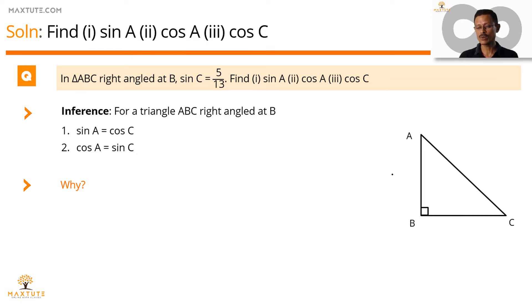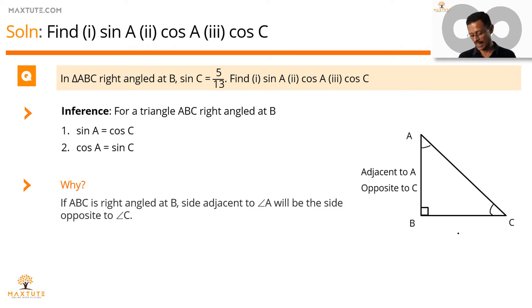The side opposite to angle C, which is AB is going to be the side adjacent to angle A. And the side opposite to angle A will be the side adjacent to angle C, which is going to be equal to BC.